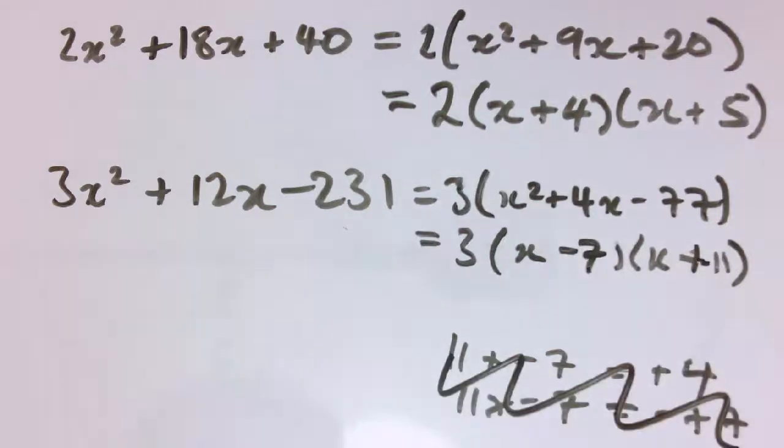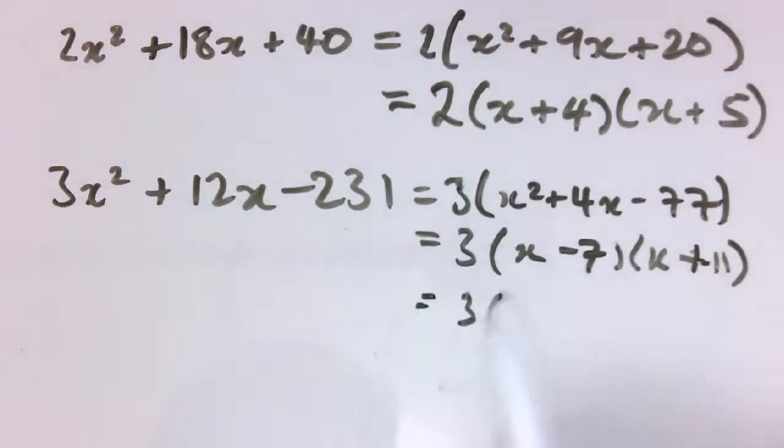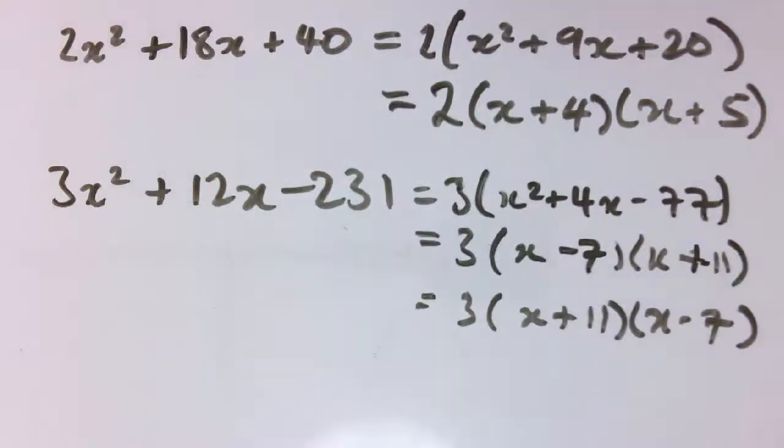And of course all of these, it doesn't matter if we write these the other way around, so that would be the same as 3 times x minus 7 times x plus 11. Either of these two forms are just as good as each other.